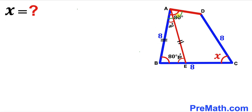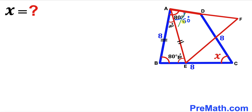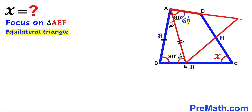The whole angle at A is 80 degrees and the small angle AEB is 20 degrees, so the remaining angle is 60 degrees. This 60-degree angle gives us a clue — we can construct equilateral triangle AEF. Since triangle AEF is equilateral, all three interior angles are 60 degrees each.